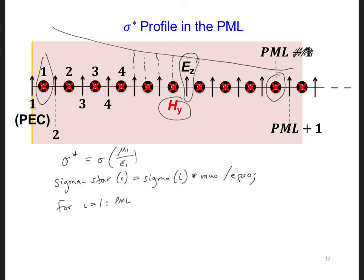So actually, I mislabeled this. I will correct this on the PowerPoint slides. This is PML here, where there is PML also. So the Hy's are going to go from 1 to PML and we can define sigma star i.